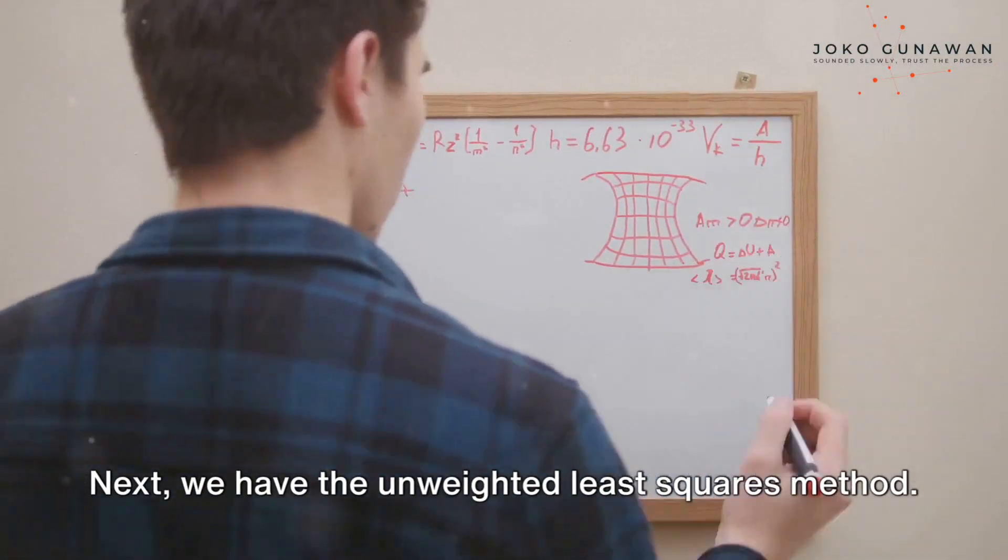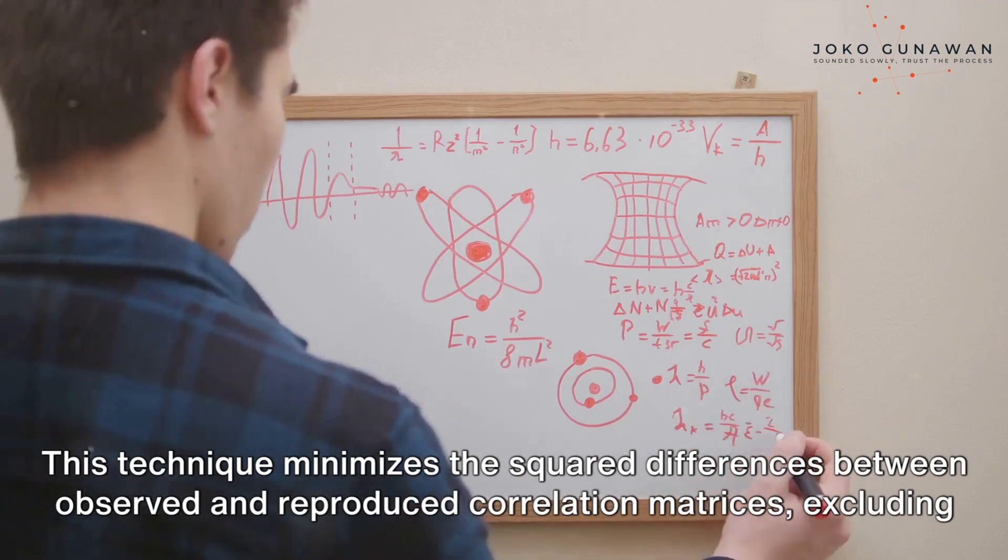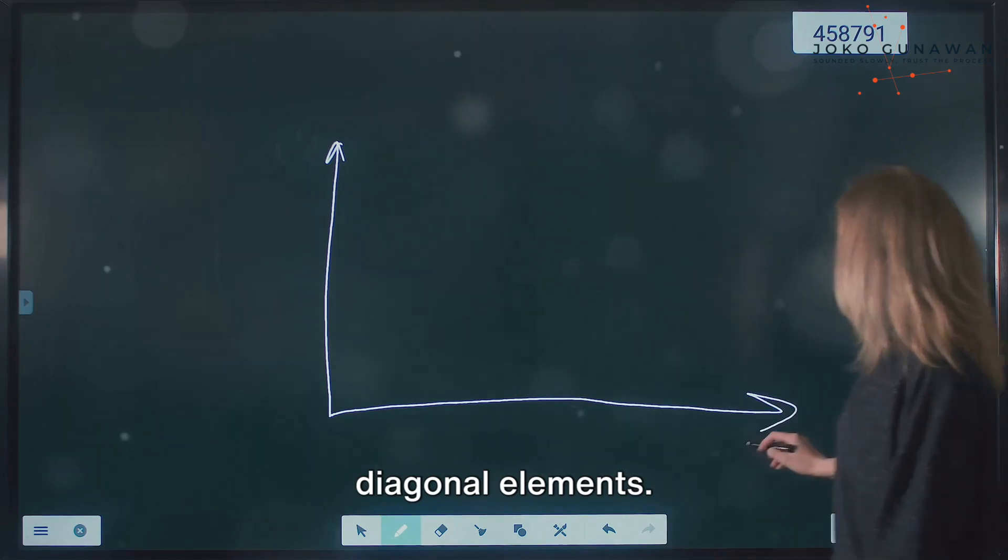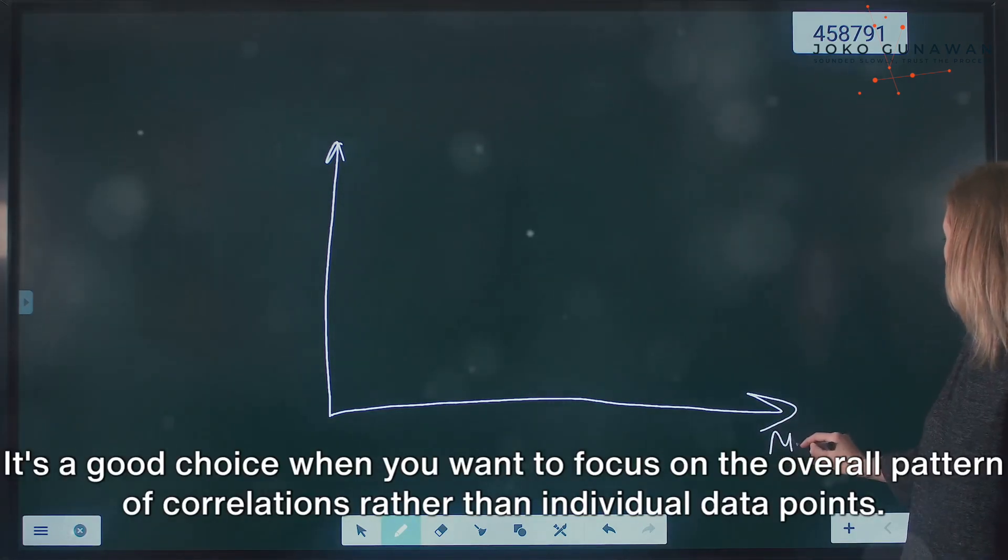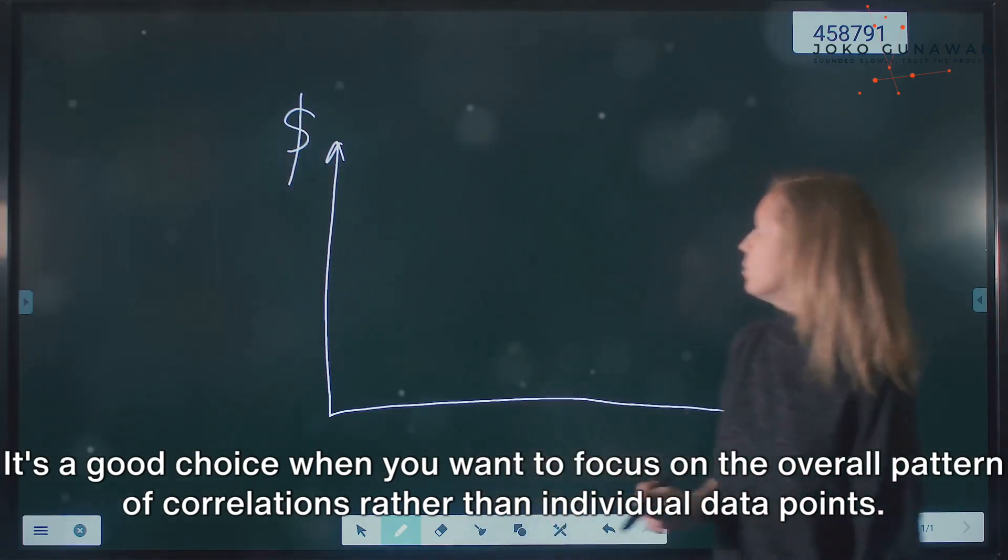Next, we have the Unweighted Least Squares method. This technique minimizes the squared differences between observed and reproduced correlation matrices, excluding diagonal elements. It's a good choice when you want to focus on the overall pattern of correlations rather than individual data points.